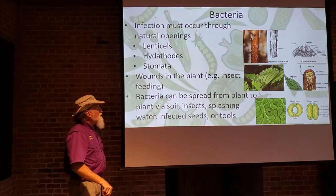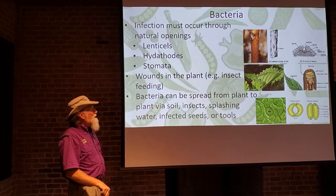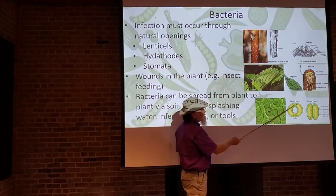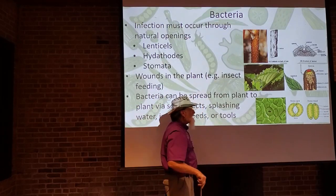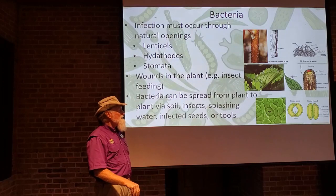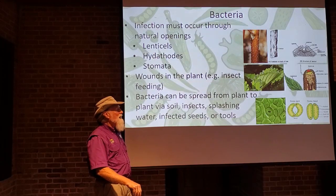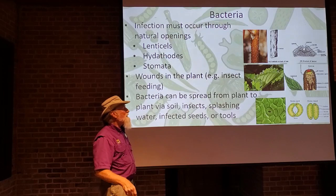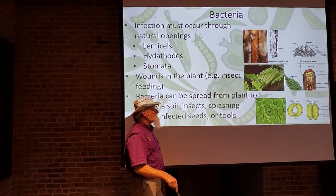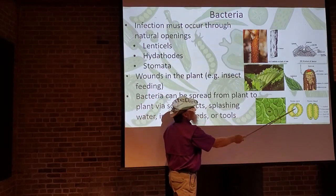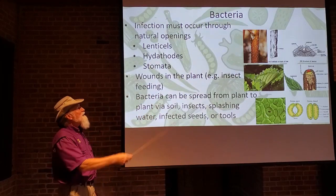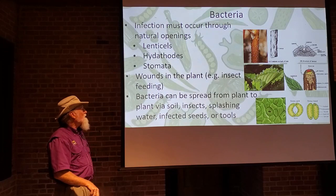The third natural opening is stomata. The stoma — one closed, one opening — regulates the amount of gas exchange in plant leaves and moisture as well. These are all over the surface of plant leaves, and when open, they go right into the interior of the leaf. This is another way bacteria can enter through natural openings: lenticels, hydathodes, and stomata.